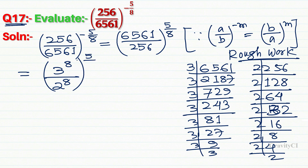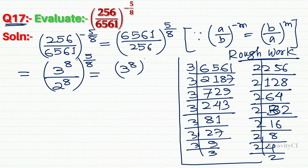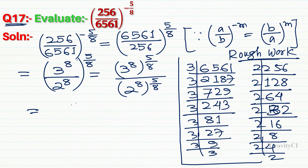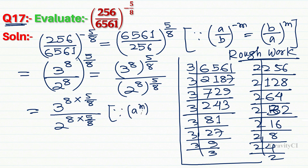Whole to the power 5 upon 8. So we get (3^8 / 2^8), whole to the power 5 upon 8. इसमें power to the power है, तो इनके powers multiply होंगे: 3 to the power 8 into 5 upon 8, और 2 to the power 8 into 5 upon 8। यहाँ पर हमने use किया है power of a power rule। फिर यह 8 से 8 cancel हो रहे हैं।